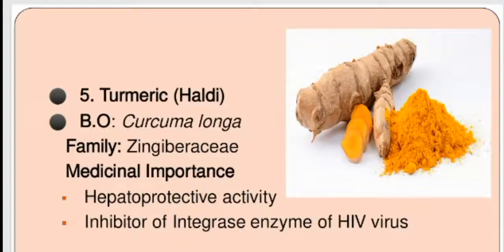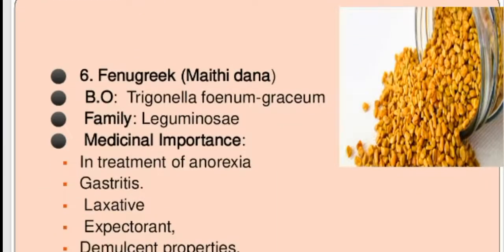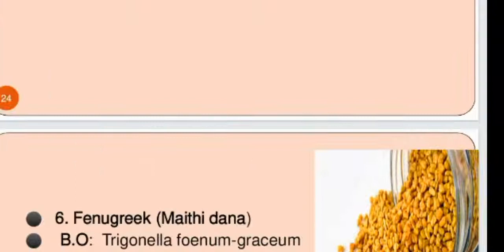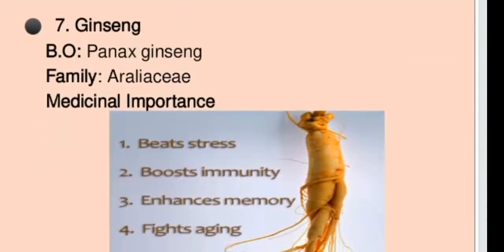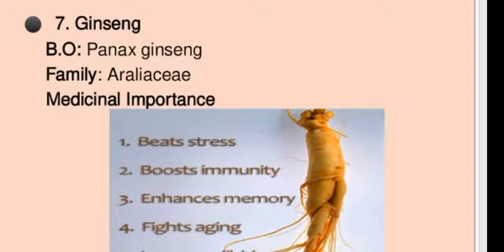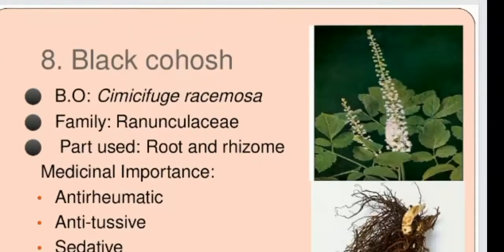Fenugreek (methi dana) has biological origin Trigonella foenum-graecum from the Leguminosae family; it is used in treatment of anorexia, gastritis, and has laxative and demulcent properties. Ginseng, Panax ginseng from the Araliaceae family, is used to reduce stress, boost immunity, and enhance memory. Black cohosh, Cimicifuga racemosa from the Ranunculaceae family, uses the root and rhizome and is important as an anti-rheumatic, antitussive, and sedative.